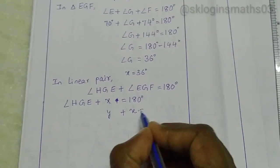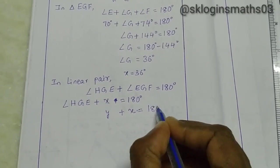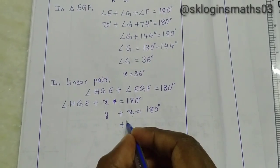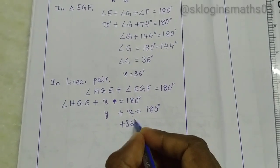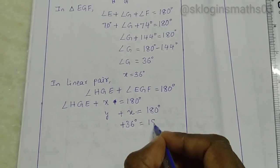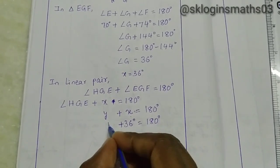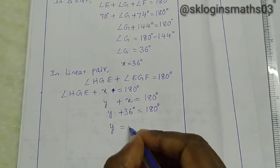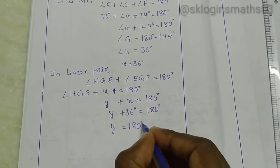Y is equal to 180 degrees minus 36 degrees, so y equals 144 degrees. This is an easy problem — done.